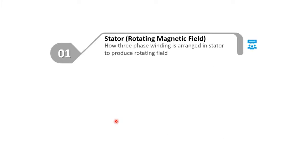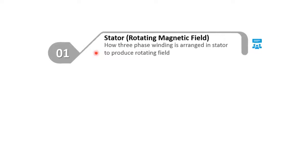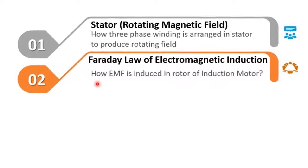This is how I am going to explain the working of induction motor. First of all, I will explain how rotating magnetic field is produced by discussing the arrangement of windings in stator.